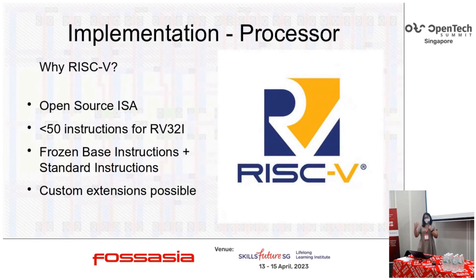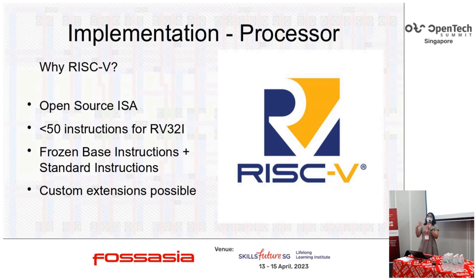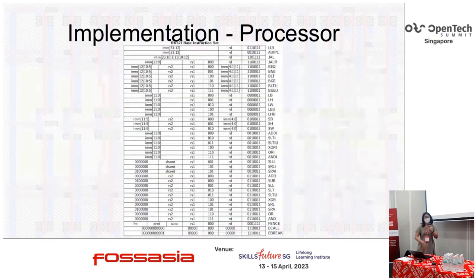So why RISC-V? The processor we're using is RISC-V. It's an open-source instruction set architecture and a very simple one — it uses fewer than 47 instructions to implement the most basic 32-bit integer instruction set. The spec itself is really frozen, although you can make your own custom extensions. If you want some feature that's not in the spec, you can implement it yourself. This is what the instruction set looks like — all of it fits in one table, just for RISC-V integer instructions.